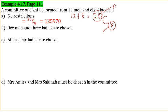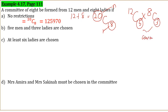Part B — 5 men and 3 ladies are chosen: from 12 men choose 5, and from 8 ladies choose 3. The answer is 12C5 × 8C3 = 44,352 ways.